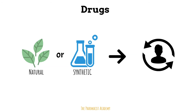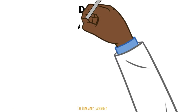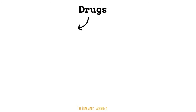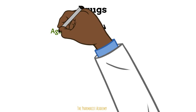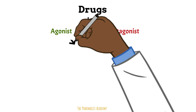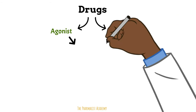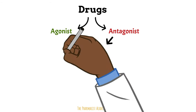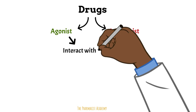Drugs can be used for their medicinal benefits to treat diseases or for recreational purposes. Regardless, drugs fundamentally work in a similar way. Based on how the drug elicits its effect, it can be categorized as an agonist or antagonist. It doesn't matter which category it falls in — all drugs interact with receptors.